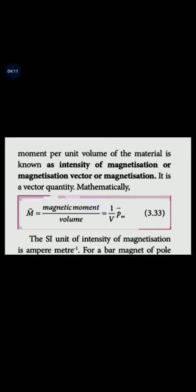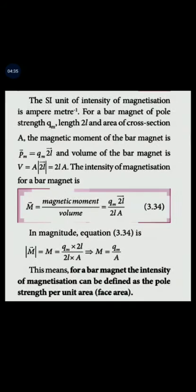The net magnetic moment per unit volume is the intensity of magnetization M. The M-vector equals the magnetic moment per volume, and its unit is ampere meter to the power minus one. Substituting QM into 2L, the magnetic moment is QM times 2L, the volume is area times length, and simplifying gives QM divided by A.